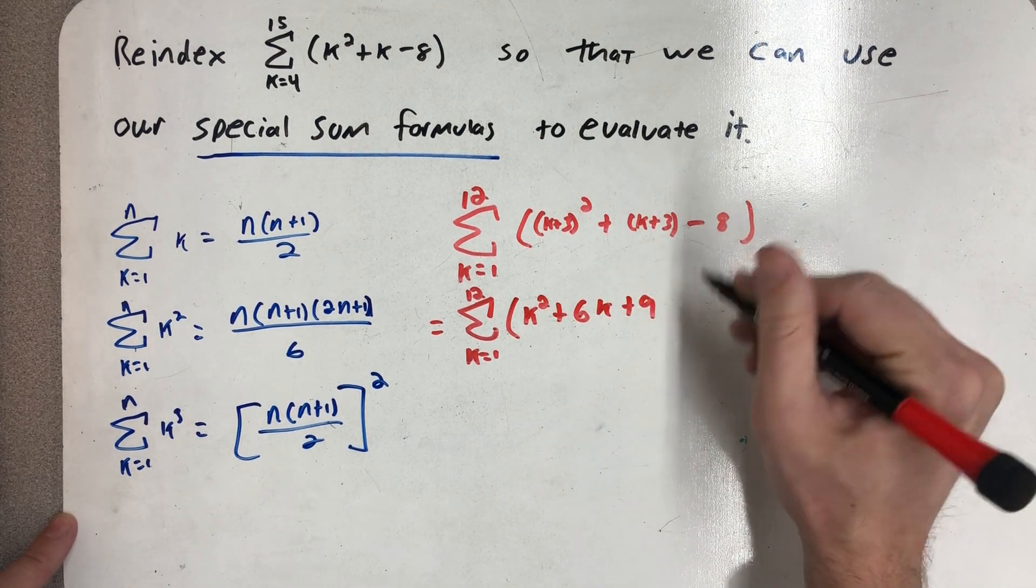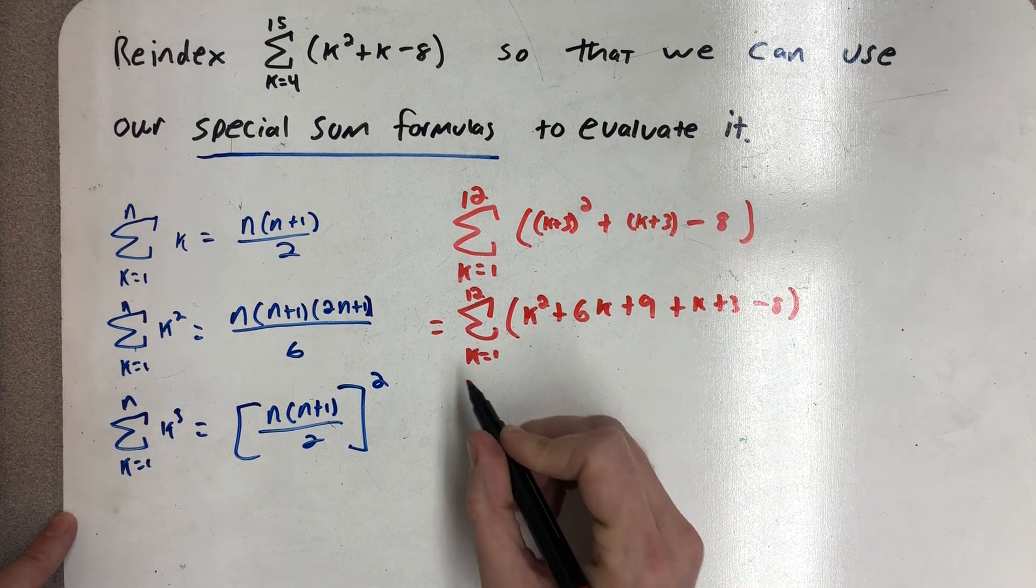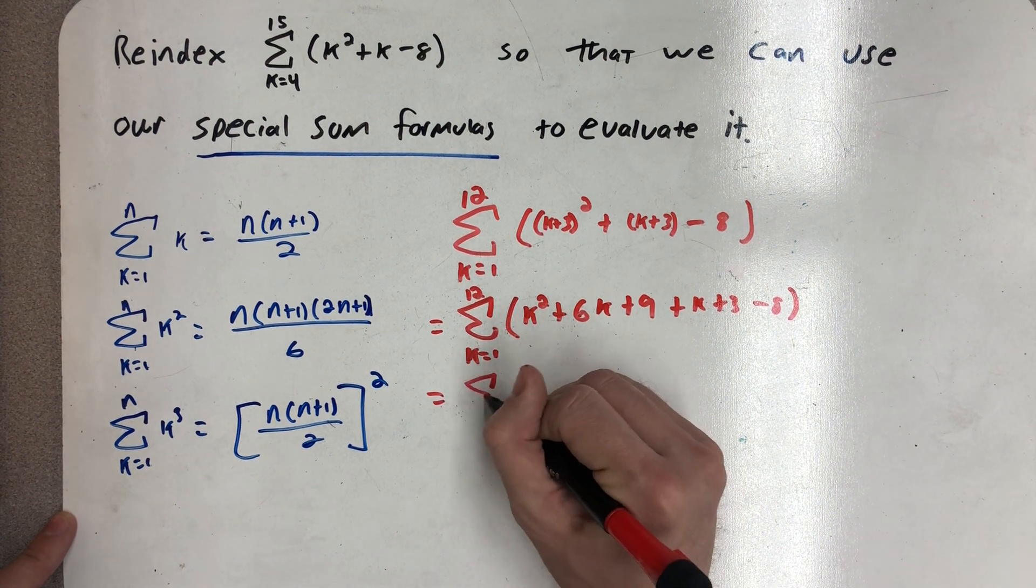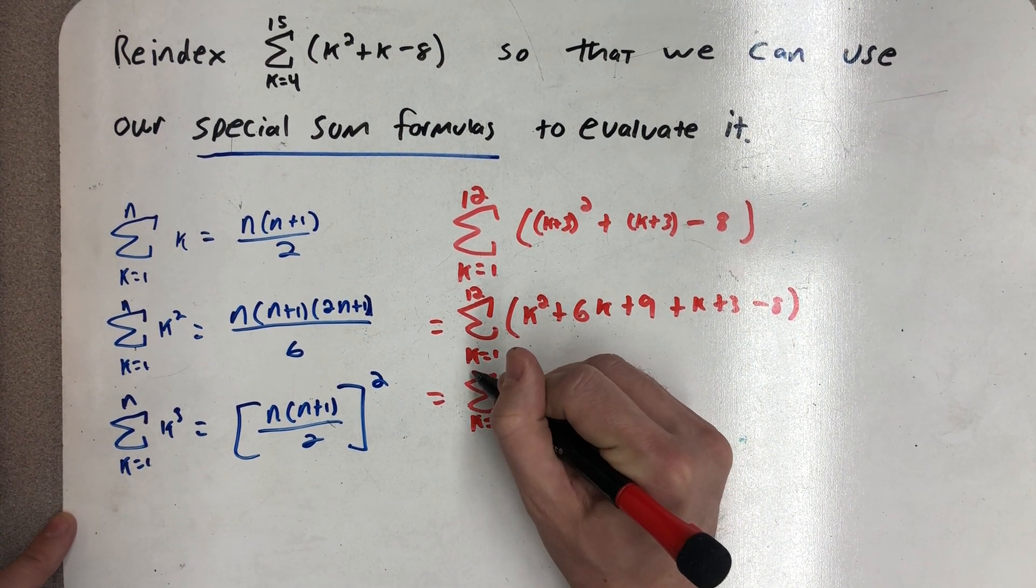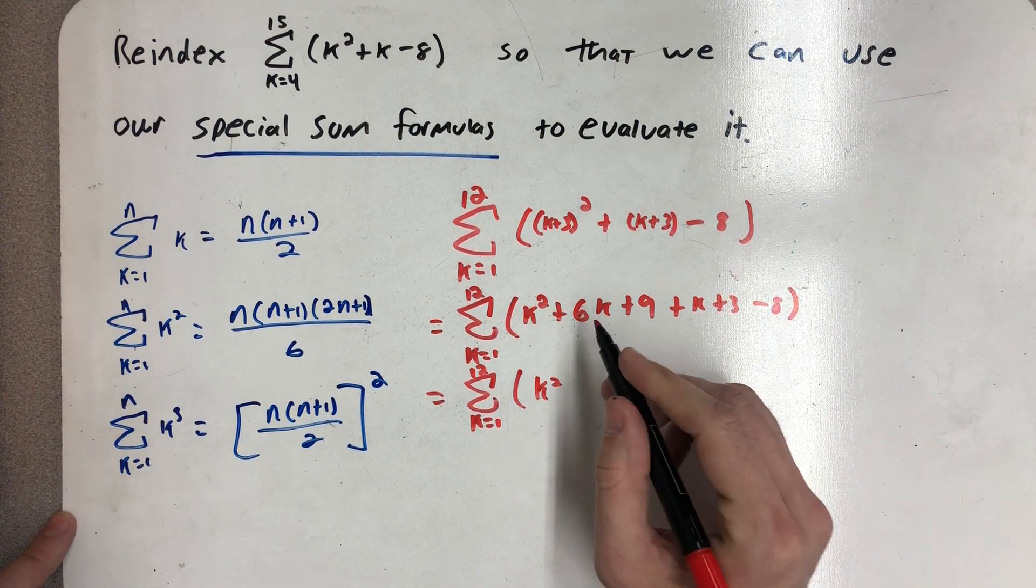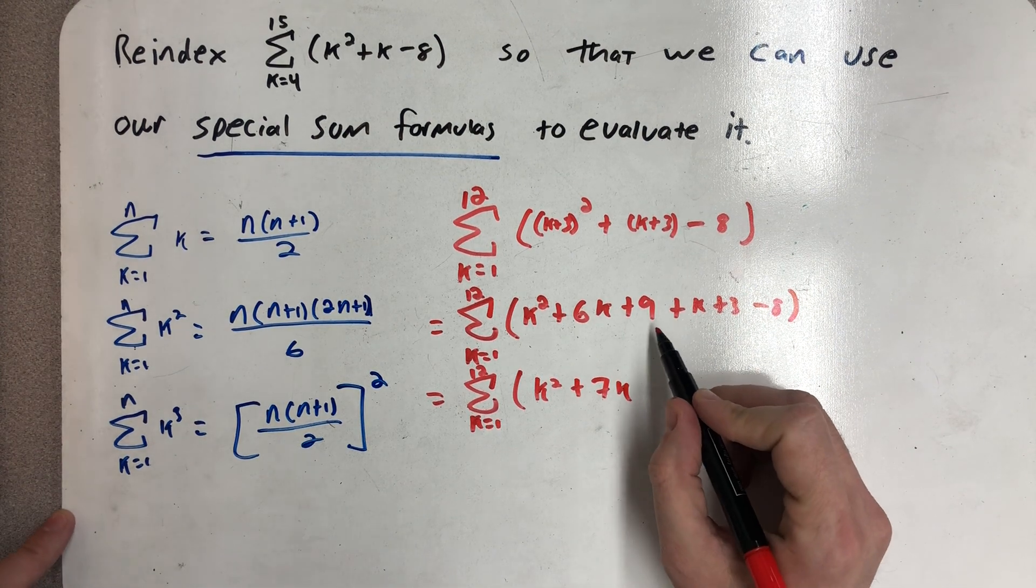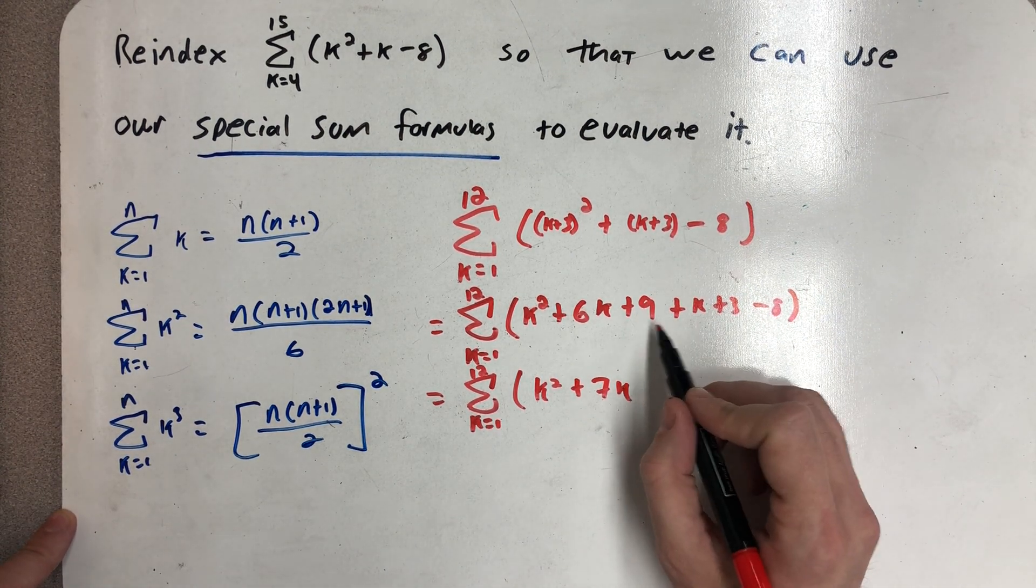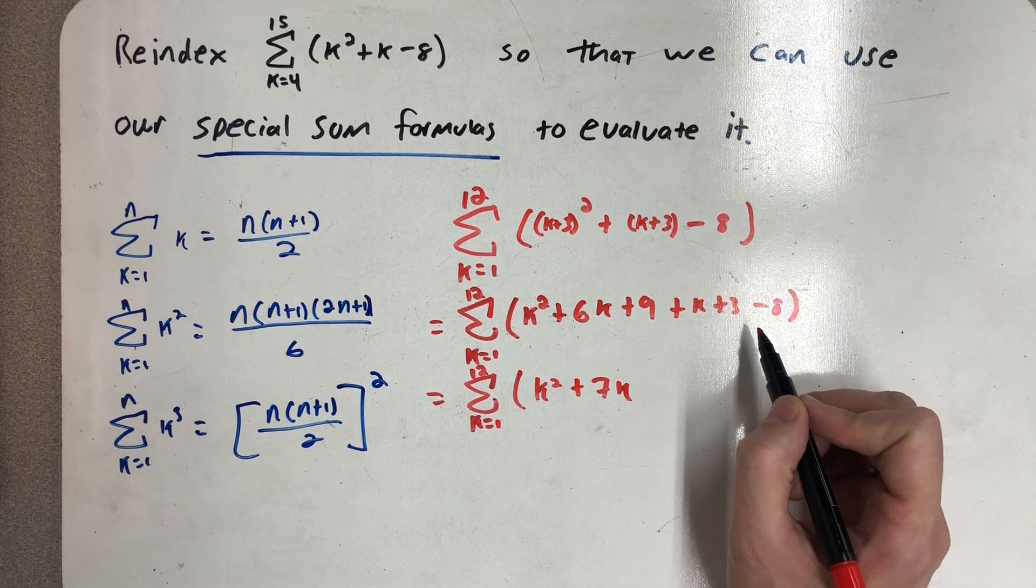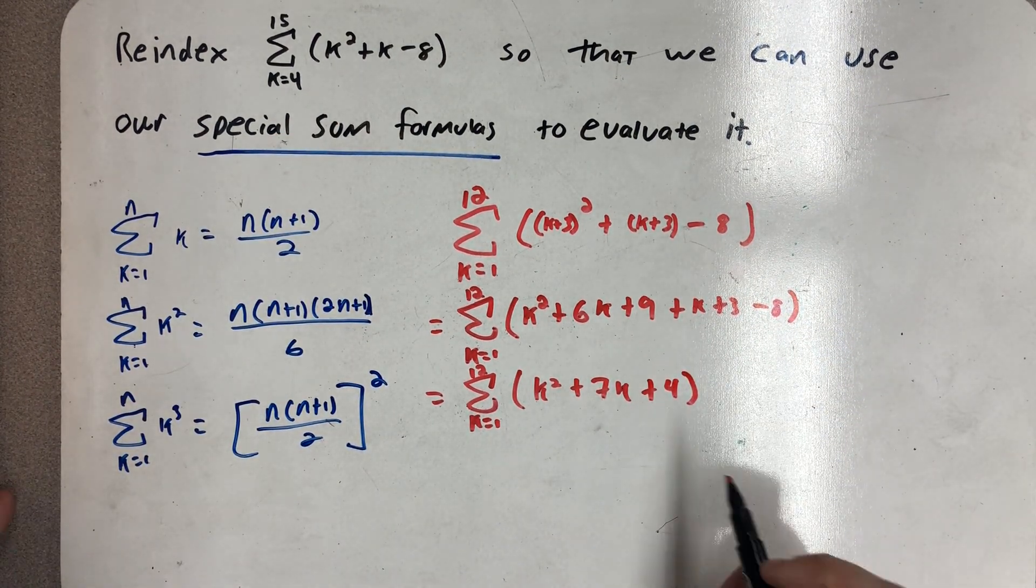I'm going to square this out and then I'll end up combining some like terms. There's just the one square term but I have 6k and 1k more so I have 7k, and then I have plus 9 plus 3 is 12 minus 8 is 4.